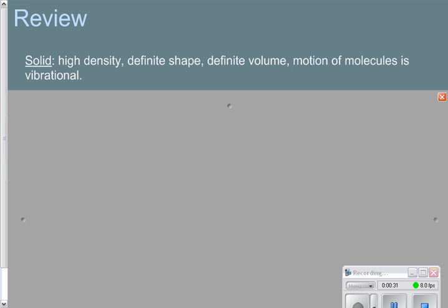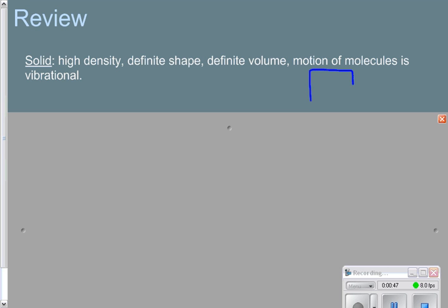Solids have a very high density, a very definite shape, a definite volume, and the motion of the molecules is pretty much restricted to vibrating back and forth. If we were to draw a small cross-section, we would see the particles very neatly arranged right next to each other in a fairly regular pattern, with very little space between the molecules or atoms. They are not really free to move anywhere; they're kind of locked into space.